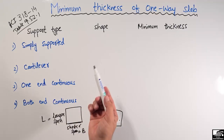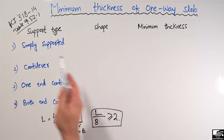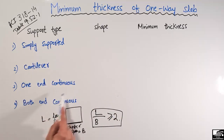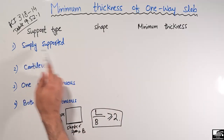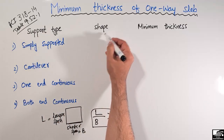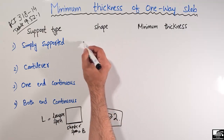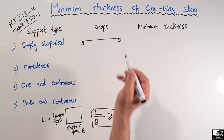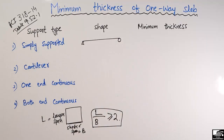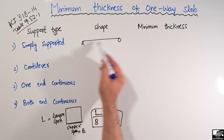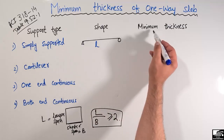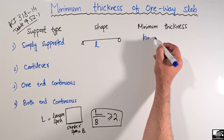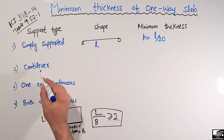For a one-way slab, it may be simply supported, cantilever, one-end continuous, or both-ends continuous, and accordingly we have different thicknesses. When it is a simply supported slab, where both ends of the slab are simply supported and the span length is L, the minimum thickness for this slab will be equal to L divided by 20.